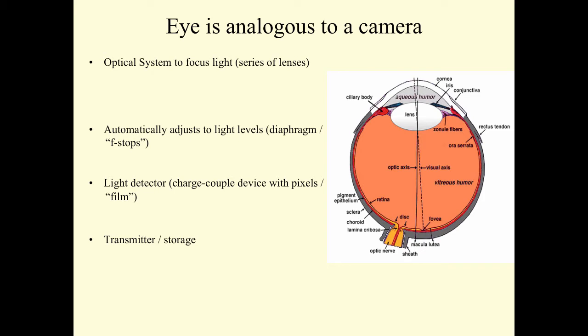Digital cameras have the ability to transmit the image to memory and store the image. So the eye's optical system to focus light would be the structures of the cornea, the aqueous and vitreous humor, and the lens. The eye has the iris, which is essentially the diaphragm to control the level of light that gets through the pupil. The retina with photoreceptor cells functions as the light detector. The optic nerve transmits the images the eye puts together to the brain, where the information can be interpreted.